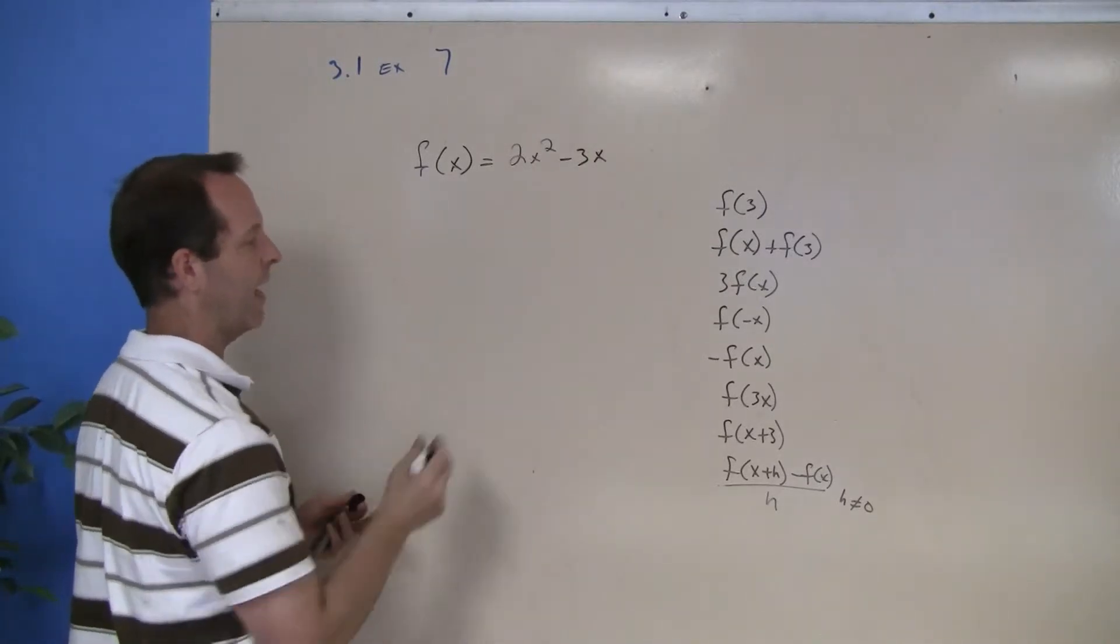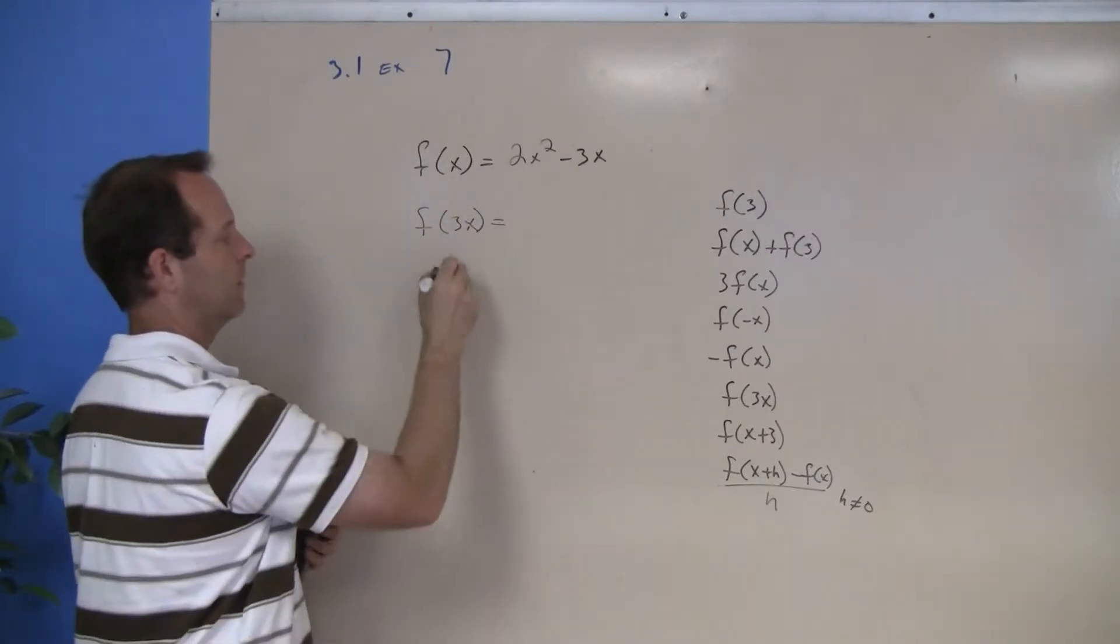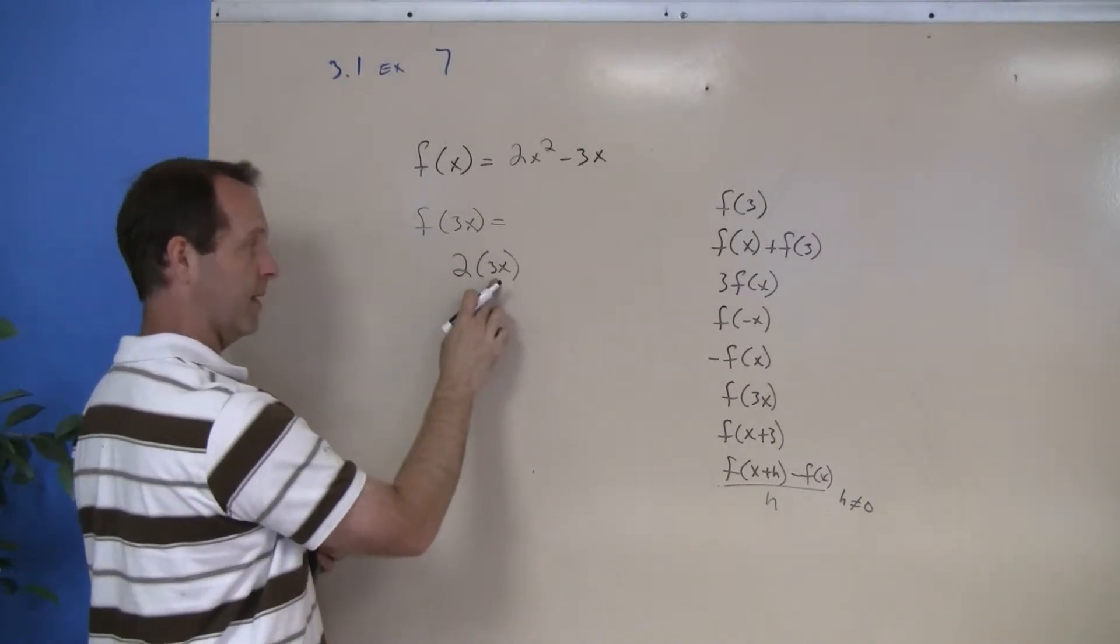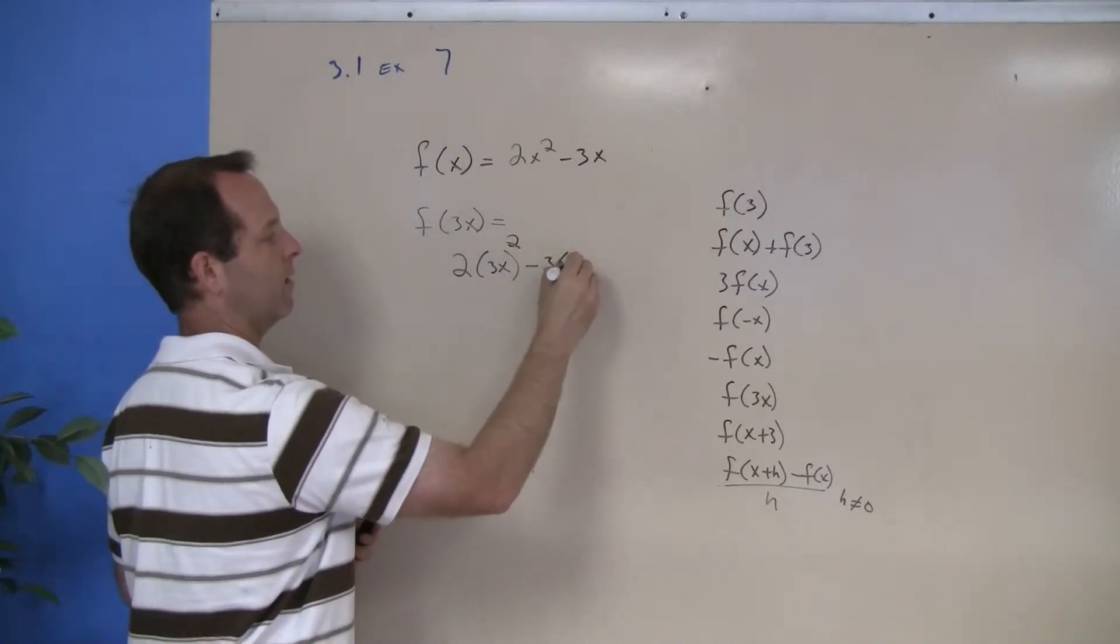Next we have f(3x). 2 times - this is my x value - in this case 3x squared minus 3 times 3x.